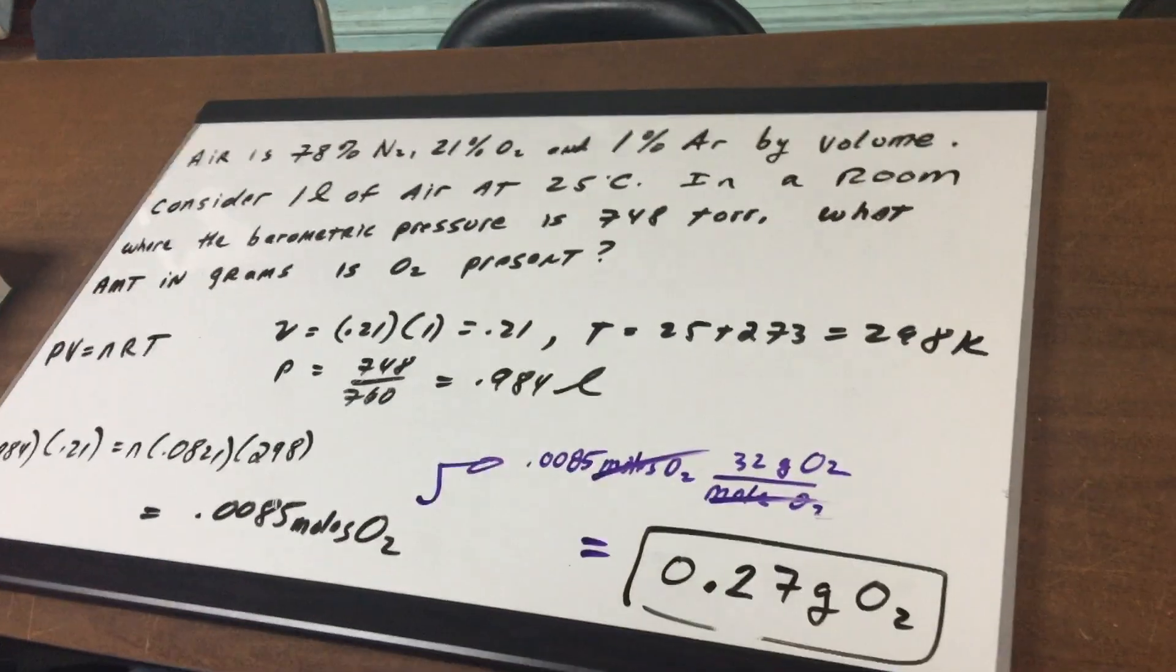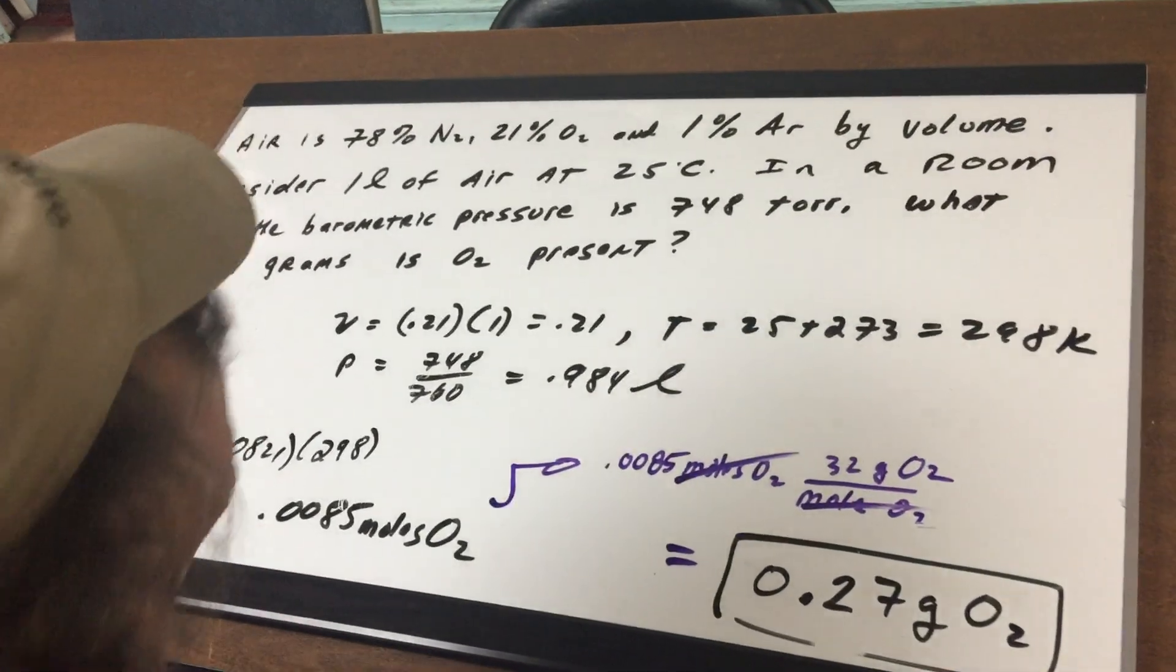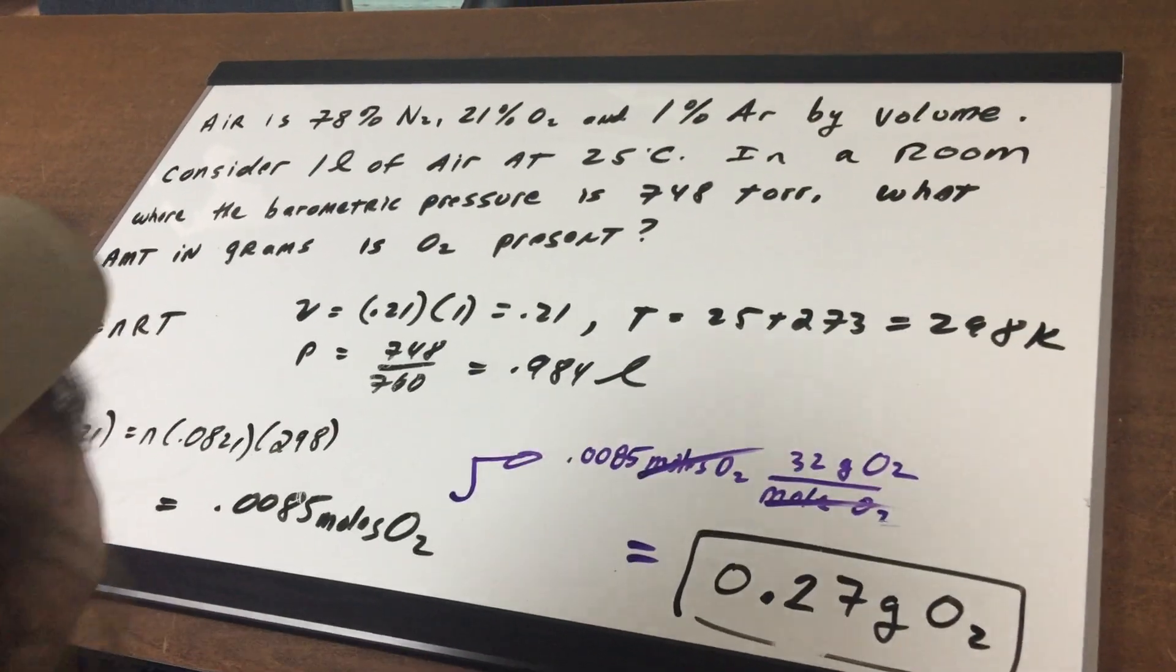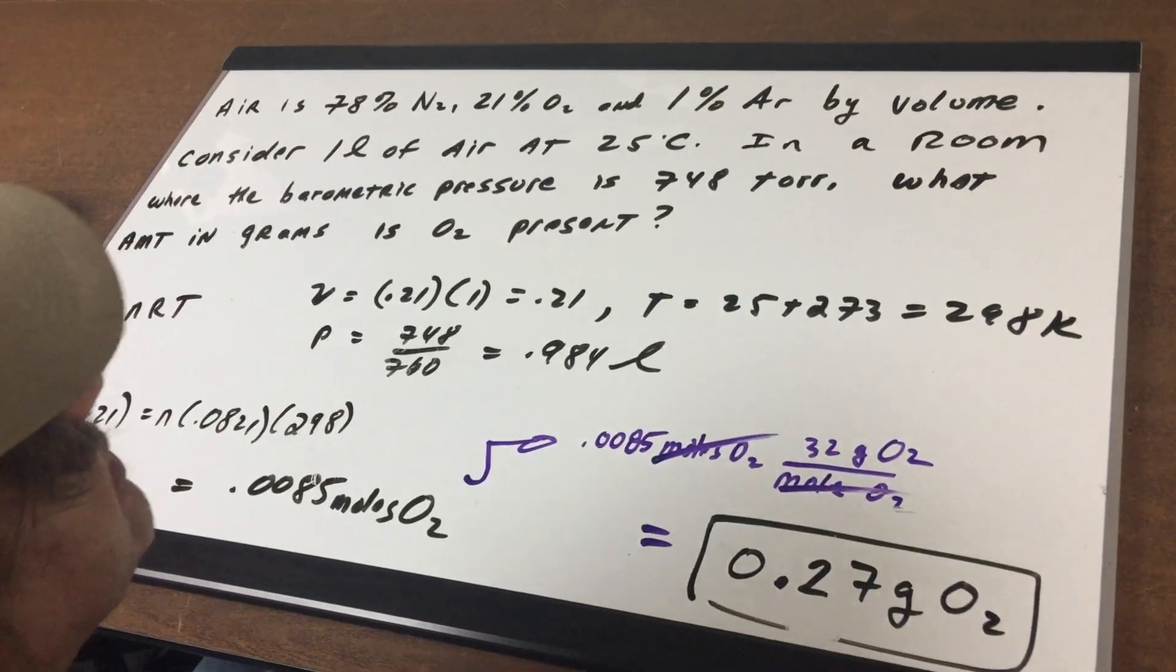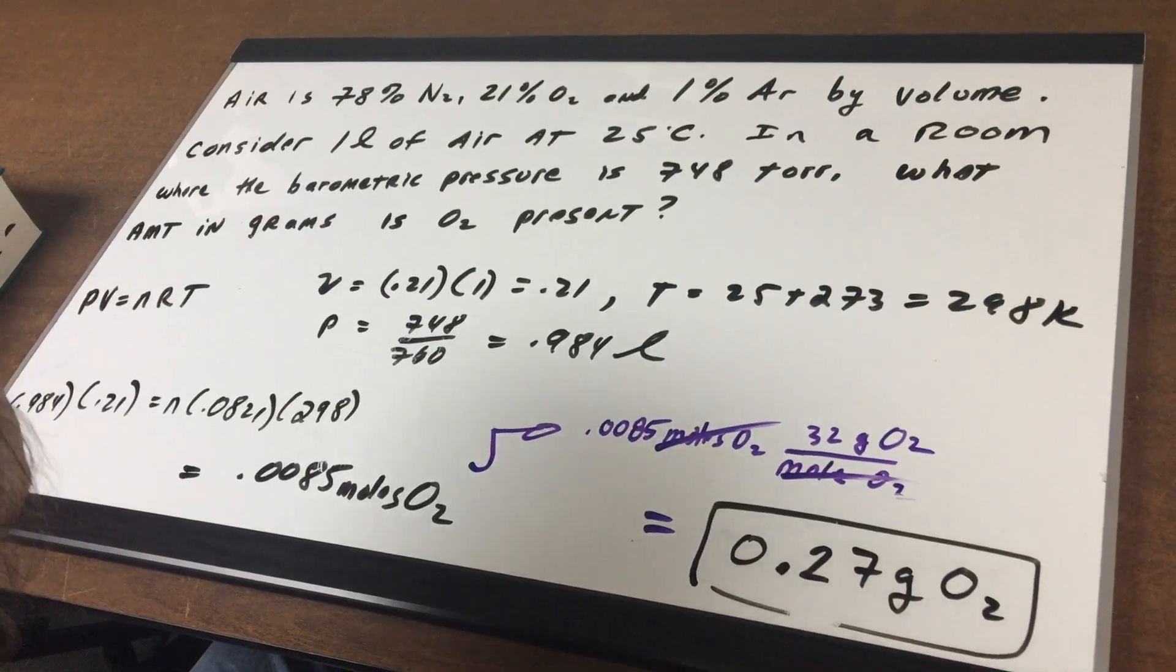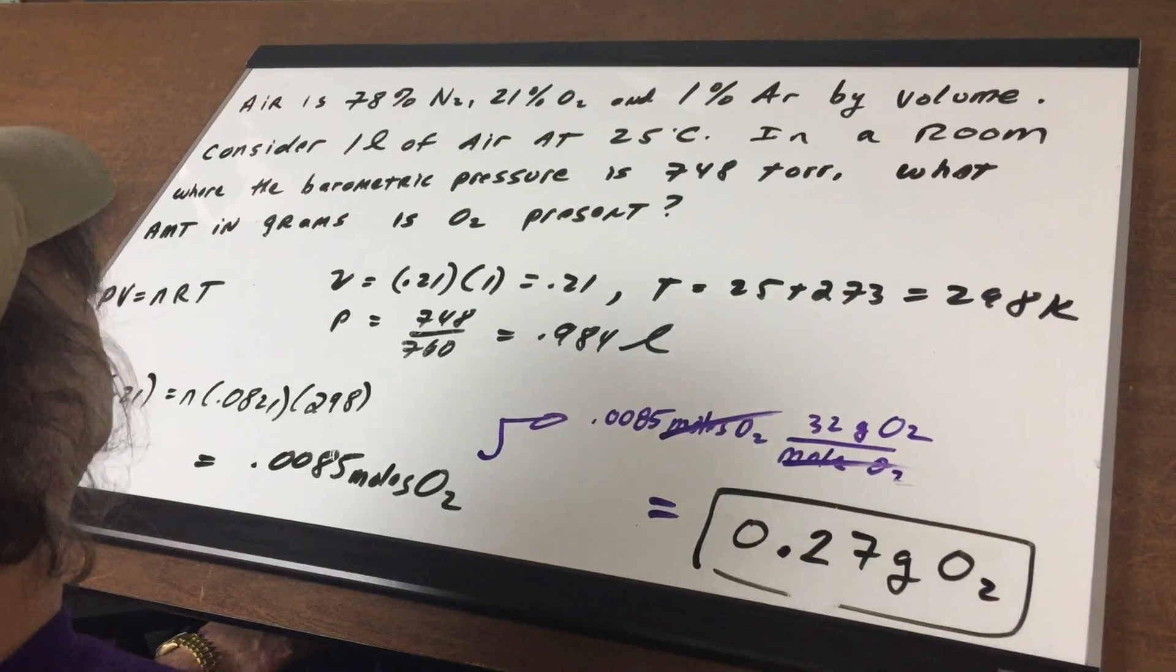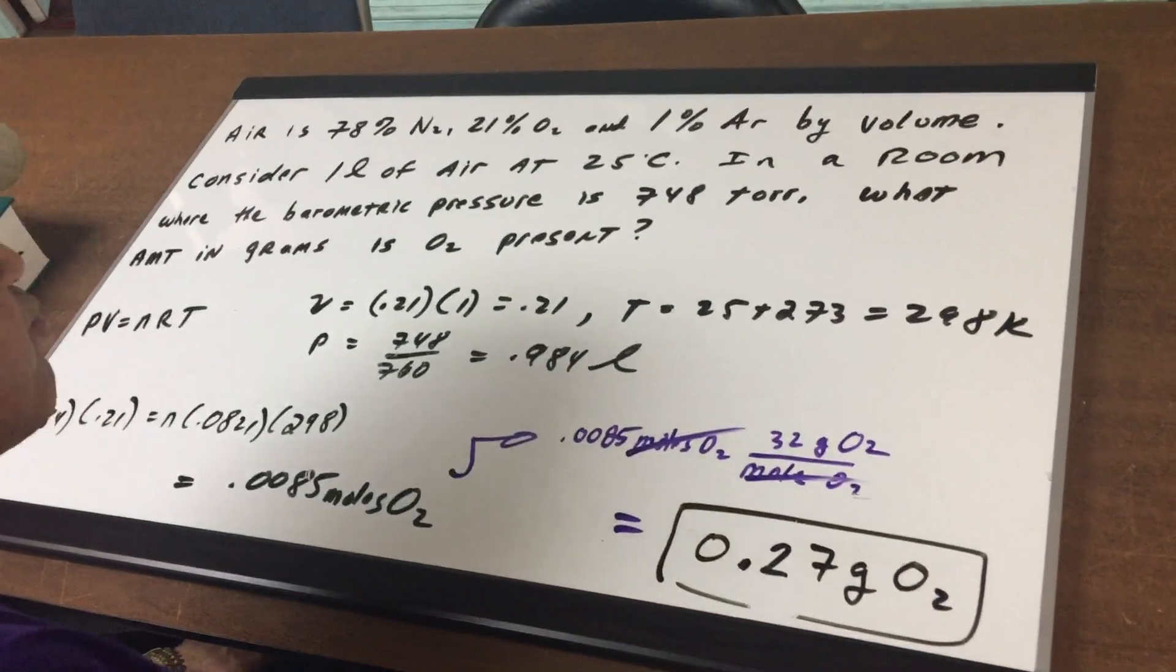Air is 78% nitrogen, 21% oxygen, and 1% argon by volume. Consider one liter of air at 25 Celsius in a room where the barometric pressure is 748 torr. What amount in grams is the oxygen present?